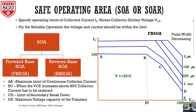For reliable operation, this safe operating area is essential and must be verified from the datasheet of the bipolar junction transistor. The safe operating area is classified into forward base safe operating area (FBSOA) and reverse base safe operating area (RBSOA). In the FBSOA, the base is forward biased so the collector-emitter current flows. There are different operating points: A, B, C, D, E.